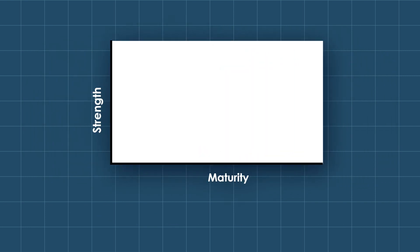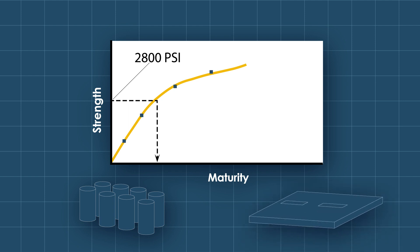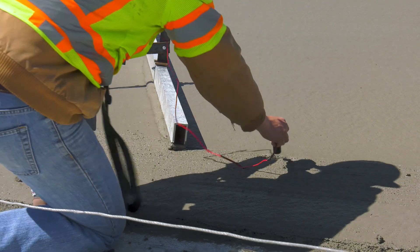The first step in maturity testing is developing the maturity calibration curve during mixture design in the laboratory. This curve establishes the relationship between concrete strength gain and maturity for the mixture. Note that this relationship is sensitive to the mixture design. If any changes are made to the mixture, a new calibration curve needs to be developed.